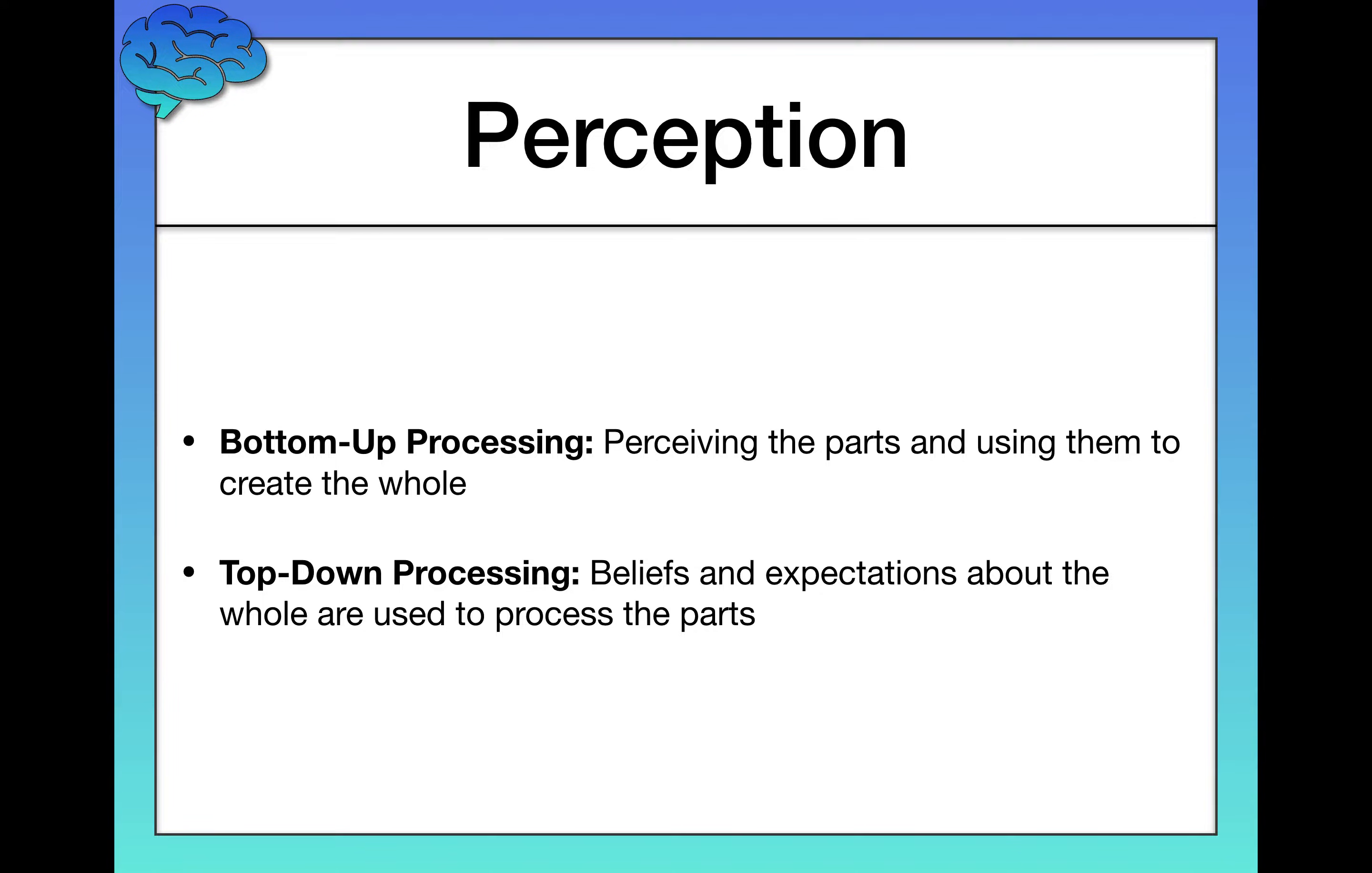Bottom-up processing is simply perceiving the parts and using those parts to create the whole. So you're simply starting at the bottom and working your way up. You're taking whatever sensory information is given to you, and you're trying to piece that sensory information together in a way that creates an experience.